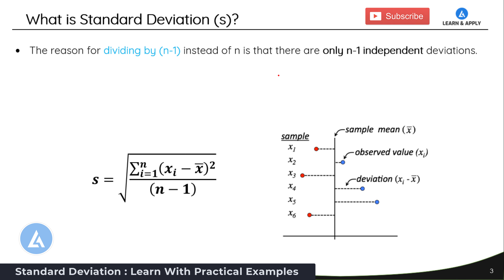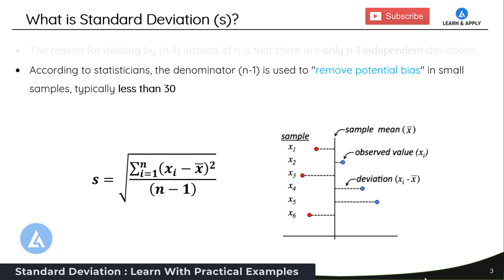What is an independent deviation? Take an example of three samples A, B, and C. Comparing A and B is one comparison, and B and C is the second comparison. Comparing A and C is not an independent comparison because we have already compared A with B and B with C, so we already know the relationship between A and C. The number of independent observations is always one less than the sample size. According to statisticians, the denominator n minus 1 is used to remove potential bias in small samples, typically less than 30. If your sample is larger than 30, you can treat it as a population standard deviation, but it is still desirable to use sample standard deviation.